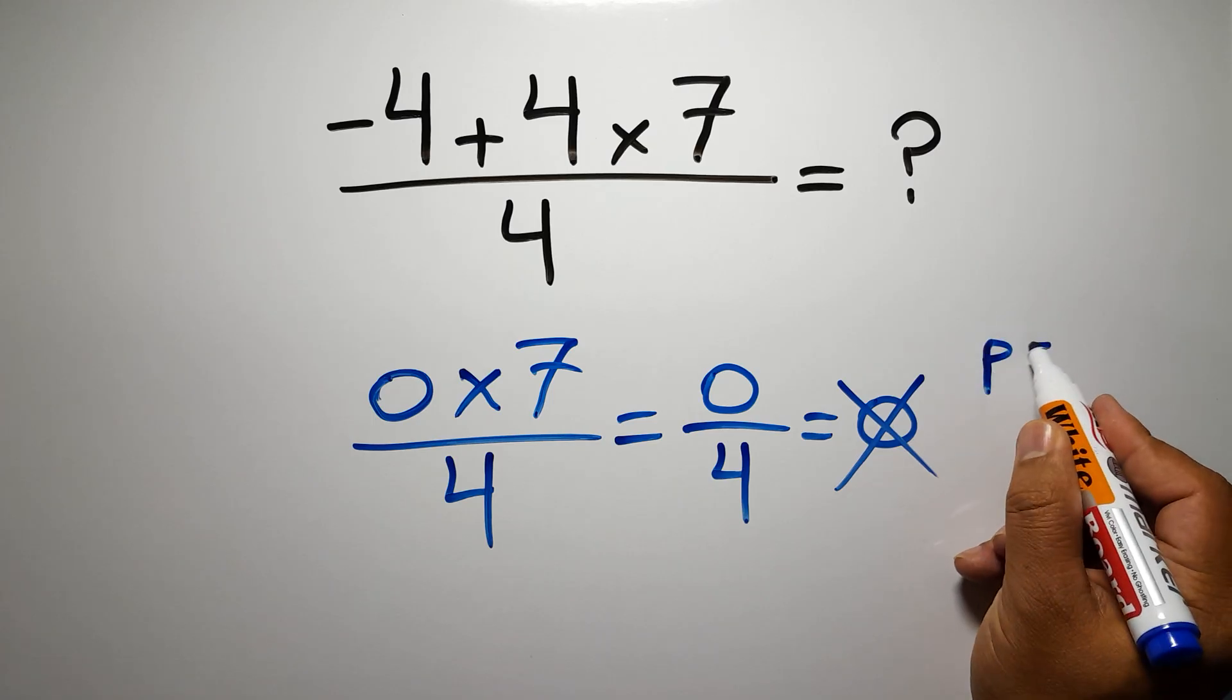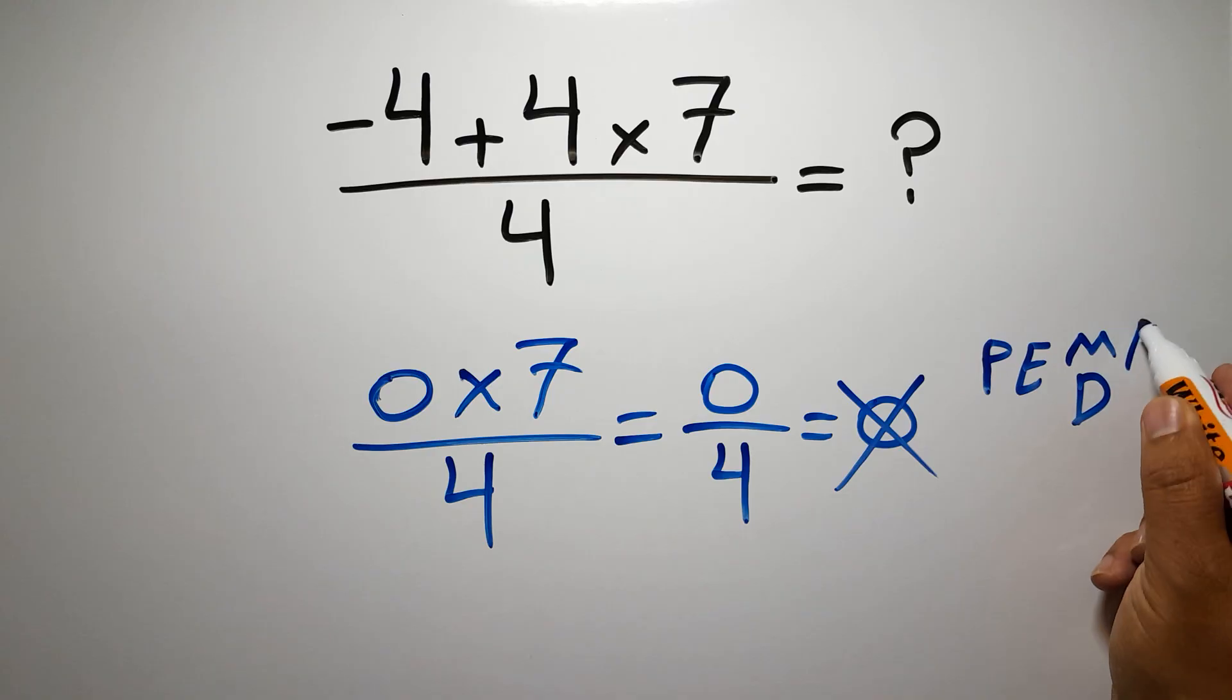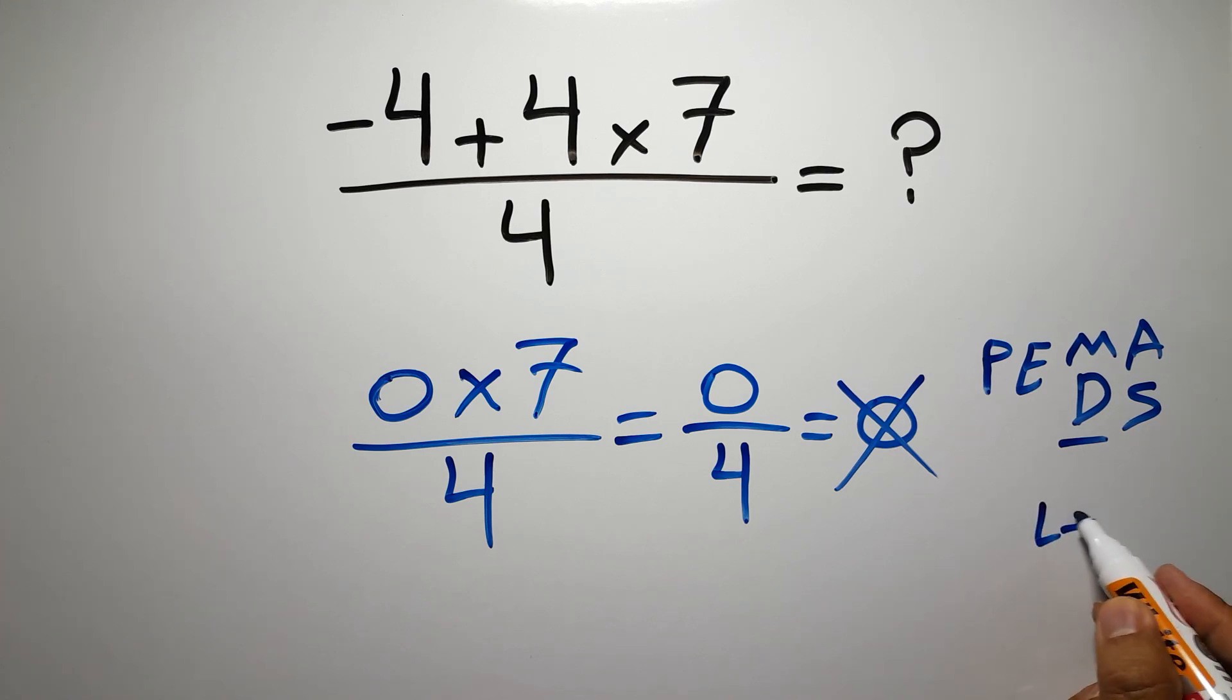First we have to do parentheses, then exponents, then multiplication or division, and finally addition or subtraction. Remember that multiplication and division have equal priority and we have to go from left to right. The same applies to addition and subtraction.